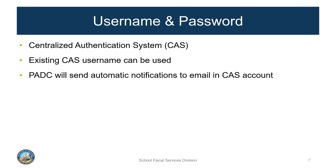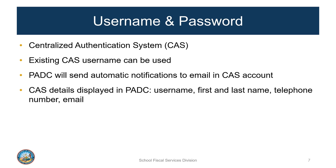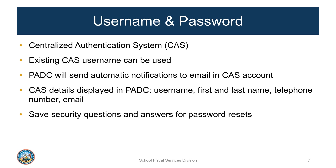The PADC web application will send users automated notifications to the email address associated with the CAS account at certain events, like user assignment and record certification. The CAS username will appear in the PADC whenever the user saves data, runs validation, certifies data, or assigns users. The system will also display a user's contact information so that users can contact each other with questions about the data. Each user should note their CAS password, security questions, and answers.